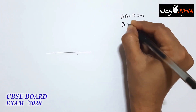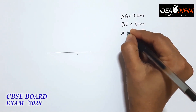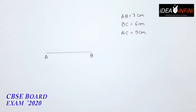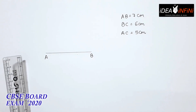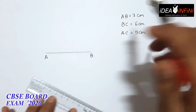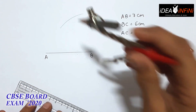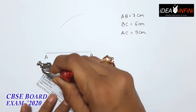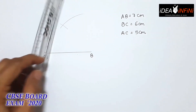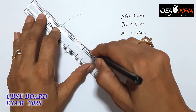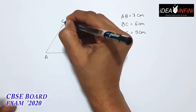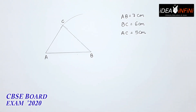Given data में एक side 7, दूसरी side 6 और तीसरी side 5 centimeters है। अगर हमने इसको A, B माना और AB 7 cm ली, तो BC distance 6 cm maintain करना है — B से 6 cm का arc कटेगा। फिर A से 5 cm का arc लेकर उस पर cut करेंगे — आपका required point C आ गया। C को B और A से join कर दिया — आपका पहला triangle A, B, C तैयार है।